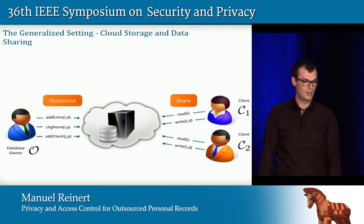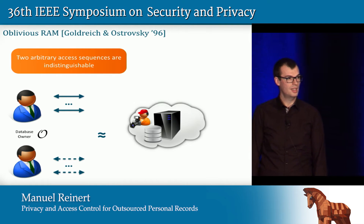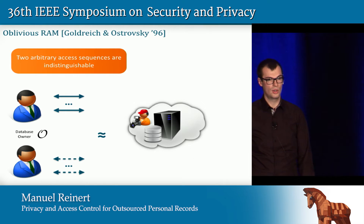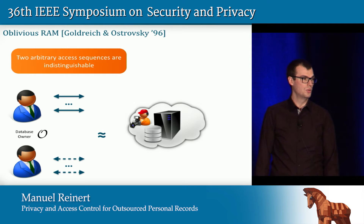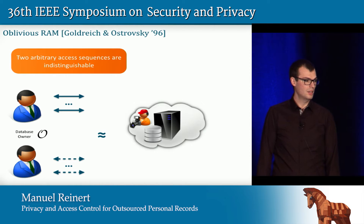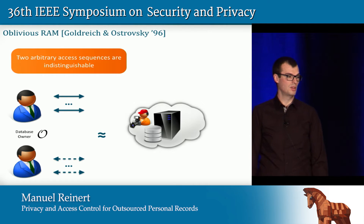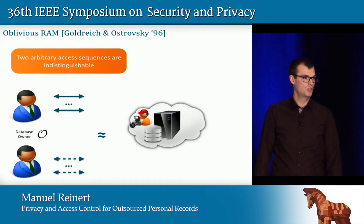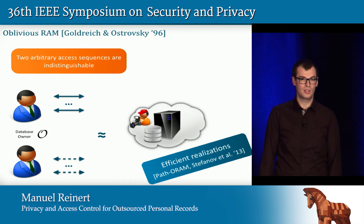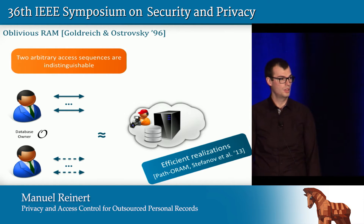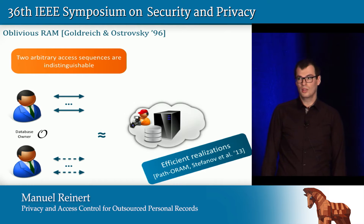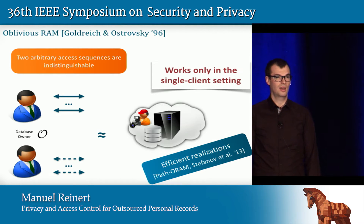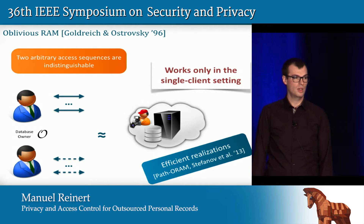If we were only interested in the database owner and cloud part of the scenario, our solution of choice would be oblivious RAM — a technique invented originally in 1996 by Goldreich and Ostrovsky to conceal from the observer of the storage the access pattern of the clients. For example, it should be indistinguishable whether the database owner reads index i and then index i, or reads index i and then index j. Unfortunately, all existing ORAM solutions, such as PathORAM presented at CCS two years ago, only work in the single-client setting and are not trivially ported to the multi-client setting. This is what we aim to achieve.